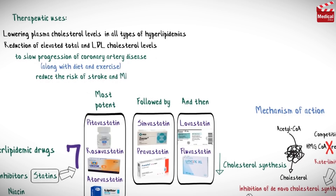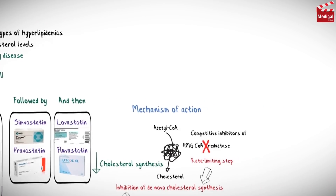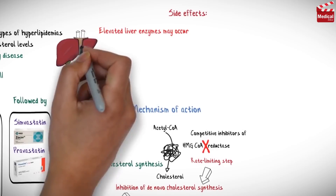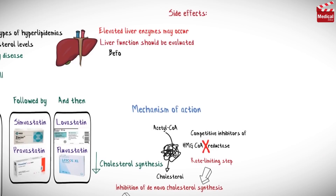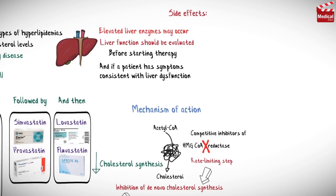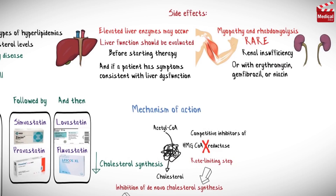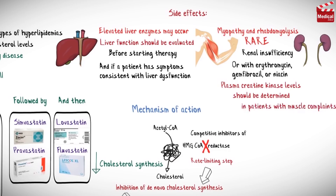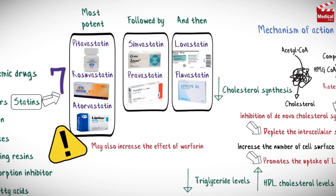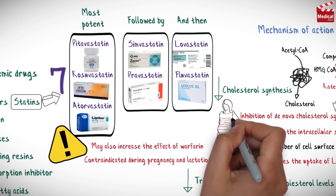Statins reduce the risk of stroke and myocardial infarction. Side effects include elevated liver enzymes, so liver function should be evaluated before starting therapy if a patient has symptoms consistent with liver dysfunction. Myopathy and rhabdomyolysis (disintegration of skeletal muscles) have been rarely reported, usually in patients with renal insufficiency or those taking drugs such as erythromycin, gemfibrozil, or niacin. Plasma creatine kinase levels should be determined in patients with muscle complaints. These agents may also increase the effect of warfarin and are contraindicated during pregnancy and lactation.